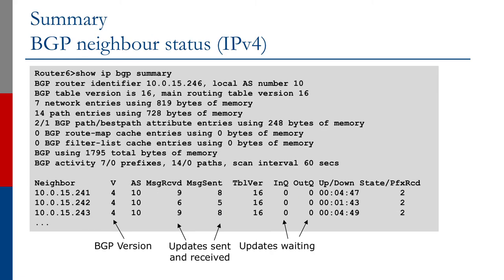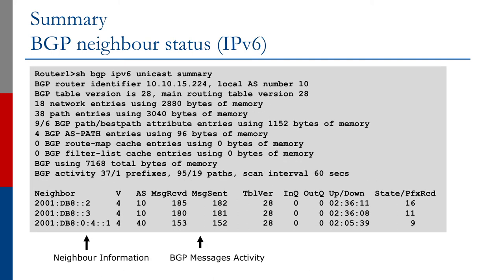Finally, once you've configured IBGP, you can check the status using the same commands as EBGP — that is, show ip bgp summary for IPv4, and show bgp IPv6 unicast summary for IPv6. Look for peering sessions where the local AS number is the same as the remote AS number.